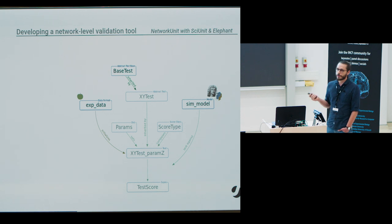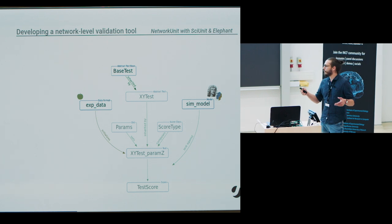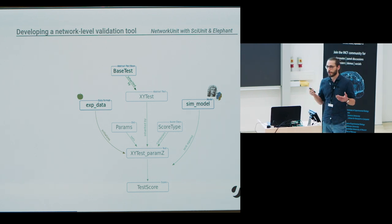For network neuroscience, this could be, for example, as it is implemented in NetworkUnit, one base test handles all the calculation of correlations. A child test of this can then, for example, compare directly the distribution of correlation coefficients. And another child test could instead use these correlation coefficients, build a graph, have further child tests, which then test graph centrality measures. And although these are very different tests, they necessarily agree on the definition of correlations, because they use the exact same code.